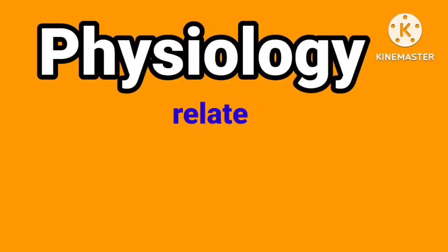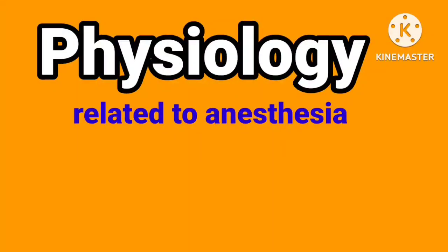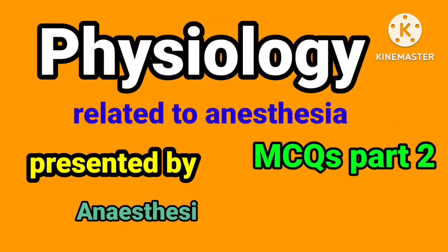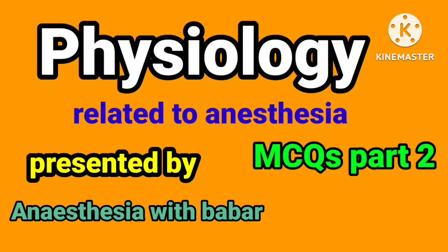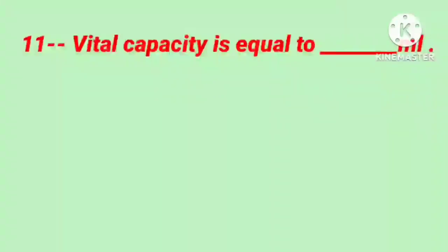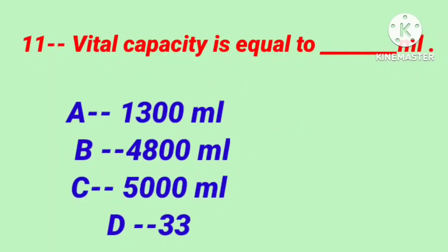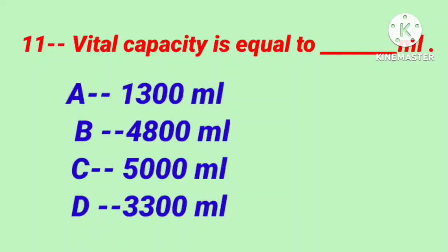Physiology related to anesthesia MCQs part 2, presented by Anesthesia with Babar. Let's start our presentation. Question number 11: Vital capacity is equal to? Option A: 1300 milliliters, Option B: 4800 milliliters, Option C: 5000 milliliters, Option D: 3300. Correct answer is option B.